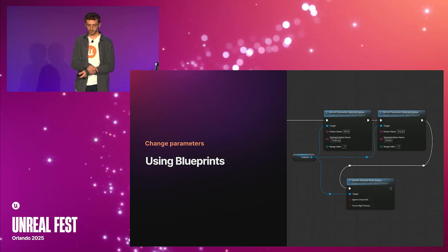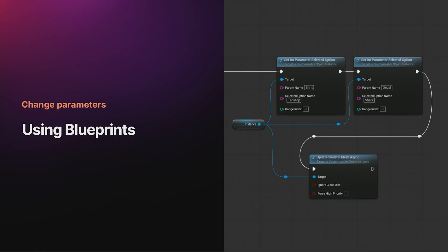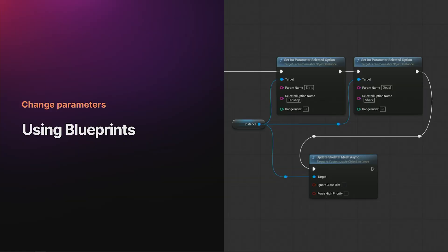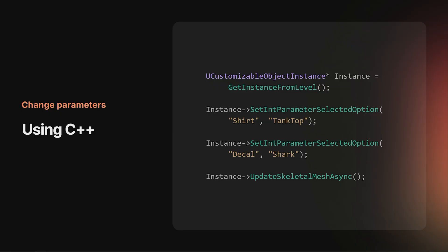Once we have an instance, we can change its parameters to create new customizations. Simply reference the instance in a Blueprint, change all the parameters you want, and call the updateSkeletalMeshAsync function. Notice that this function is called async, meaning the resulting skeletal mesh will not be generated instantly. Otherwise, you can change the parameters using C++. Mutable has one-to-one parity with both Blueprints and C++ APIs.